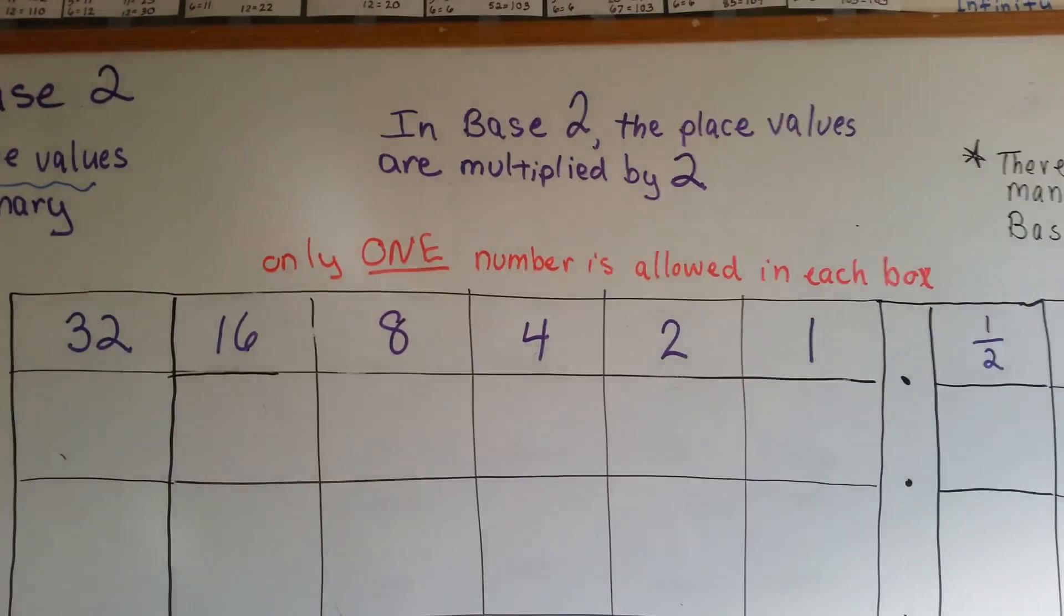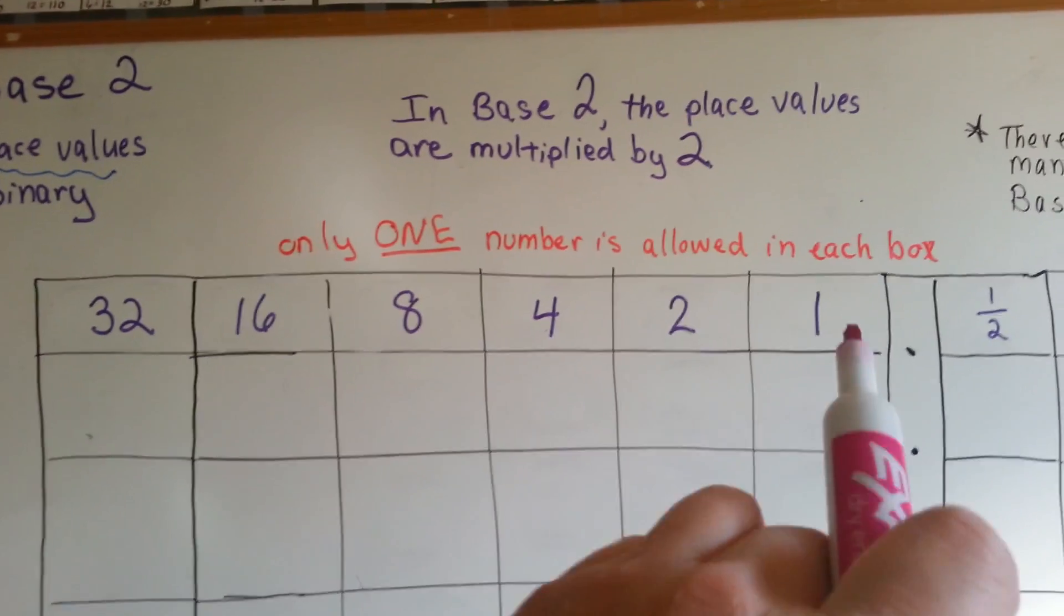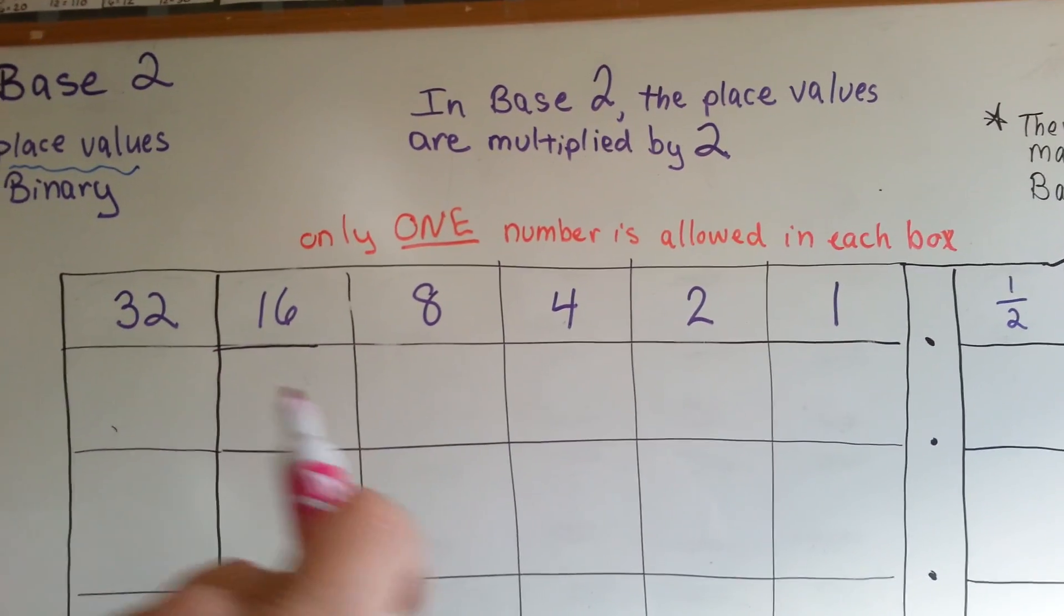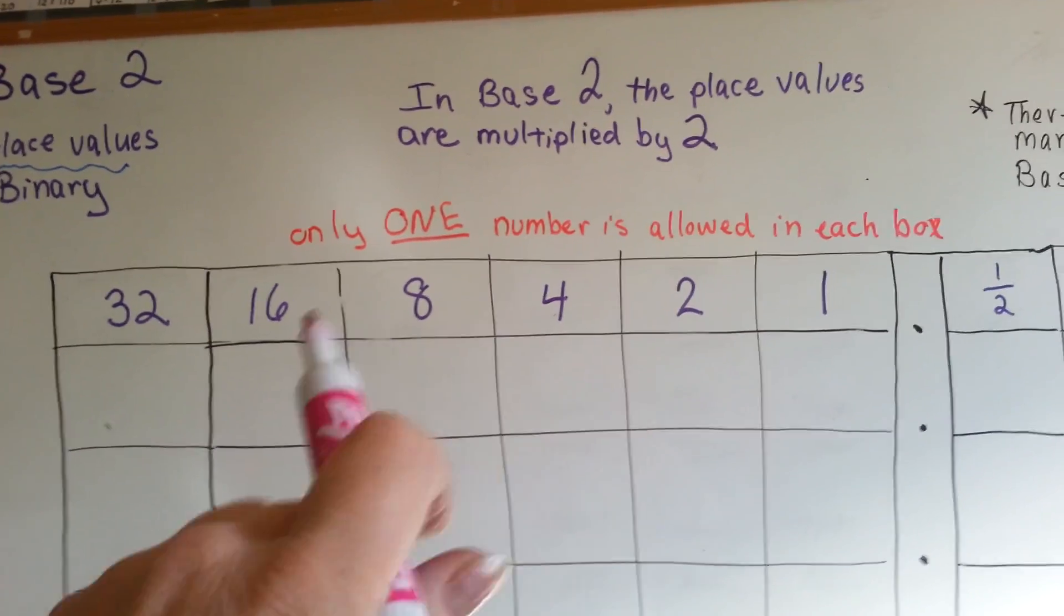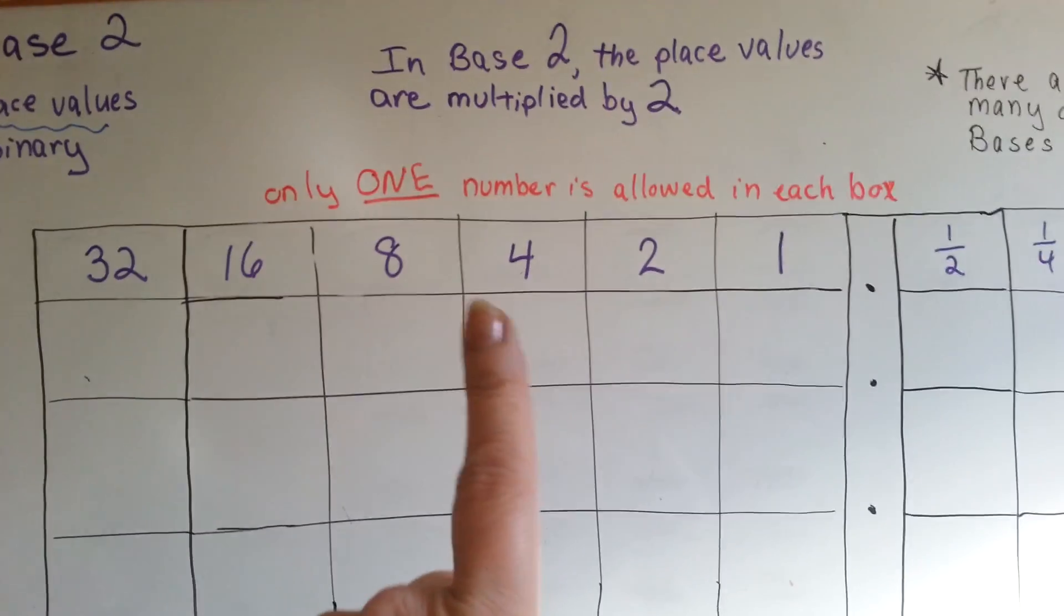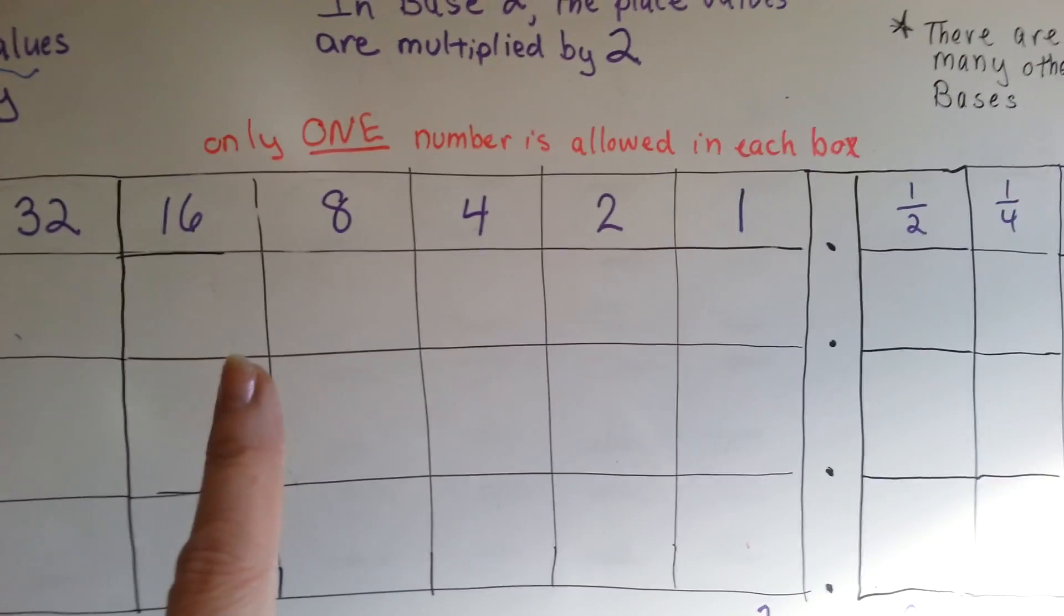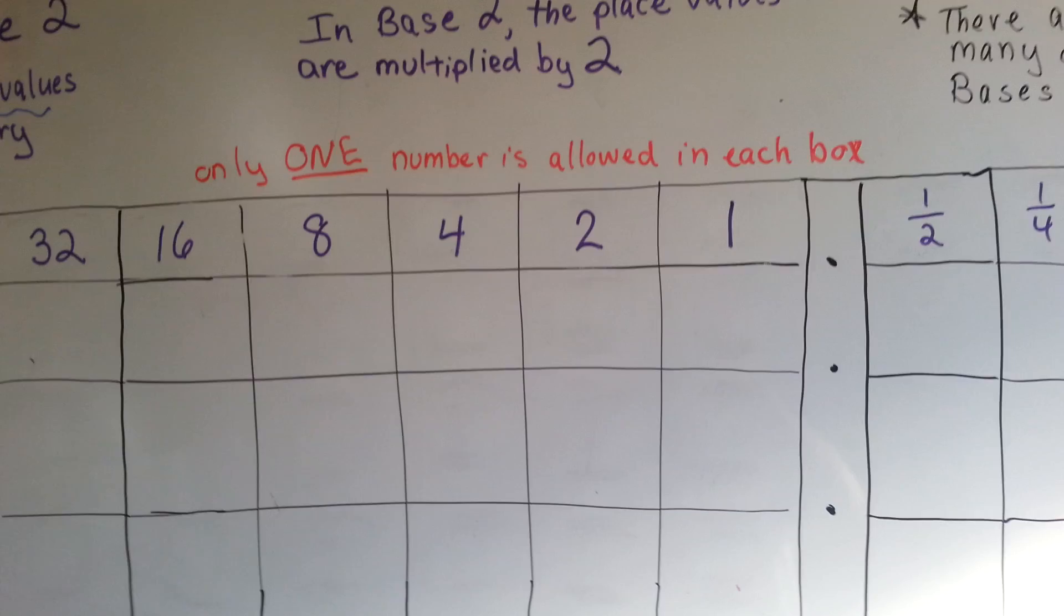Every time we move to another place value column to the left, we're multiplying it by 2. Now, only one number is allowed in each box. Let me show you an example.